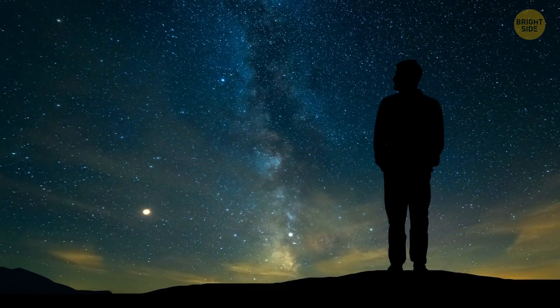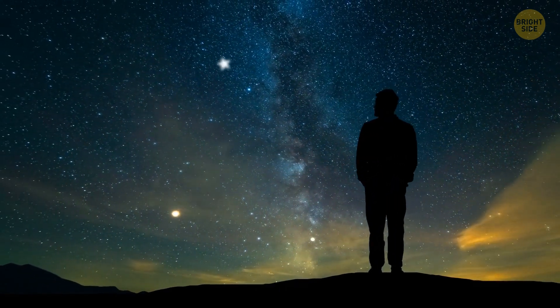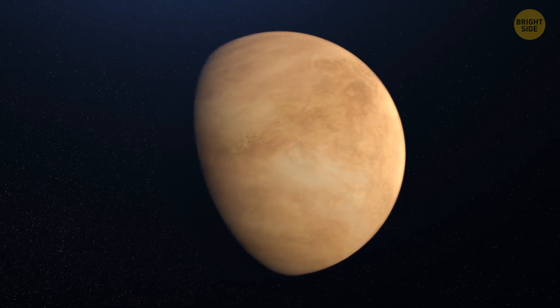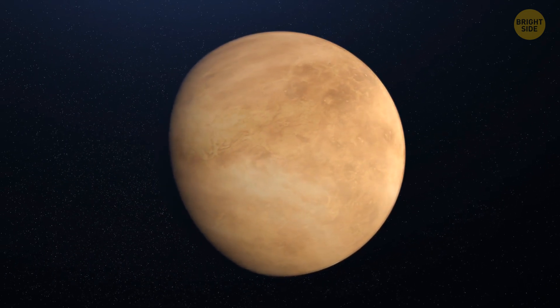What if I told you that humans could have evolved on a planet other than Earth? And we're not talking about Mars here. This planet is Venus, one of the most toxic and dangerous places in our solar system.